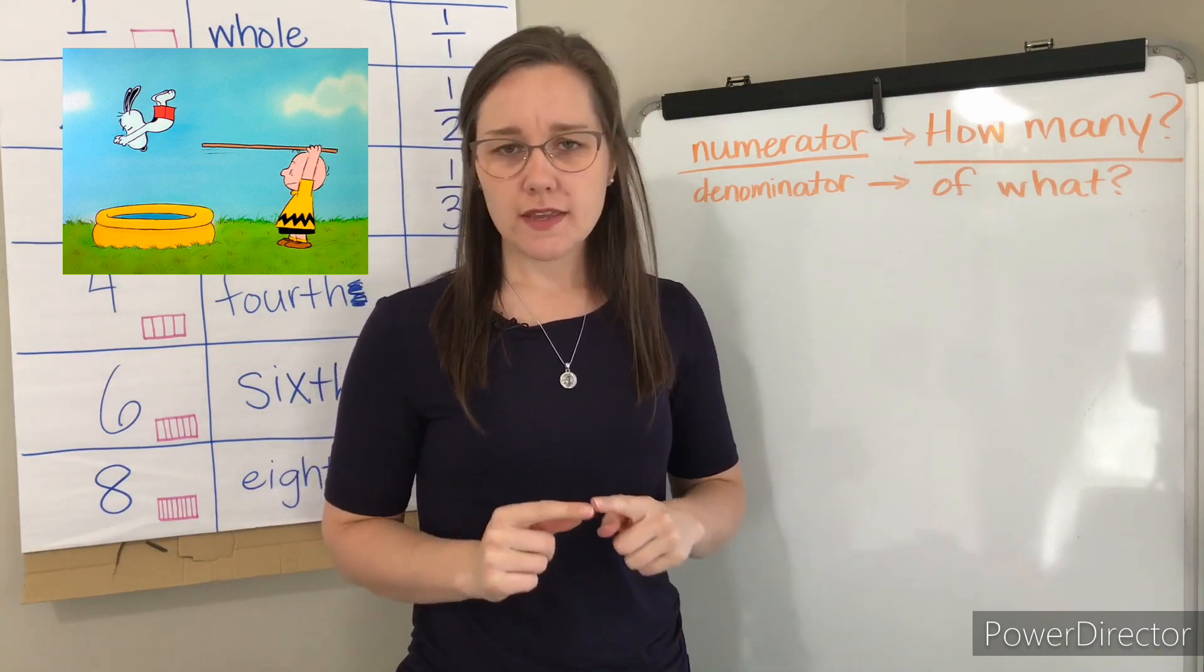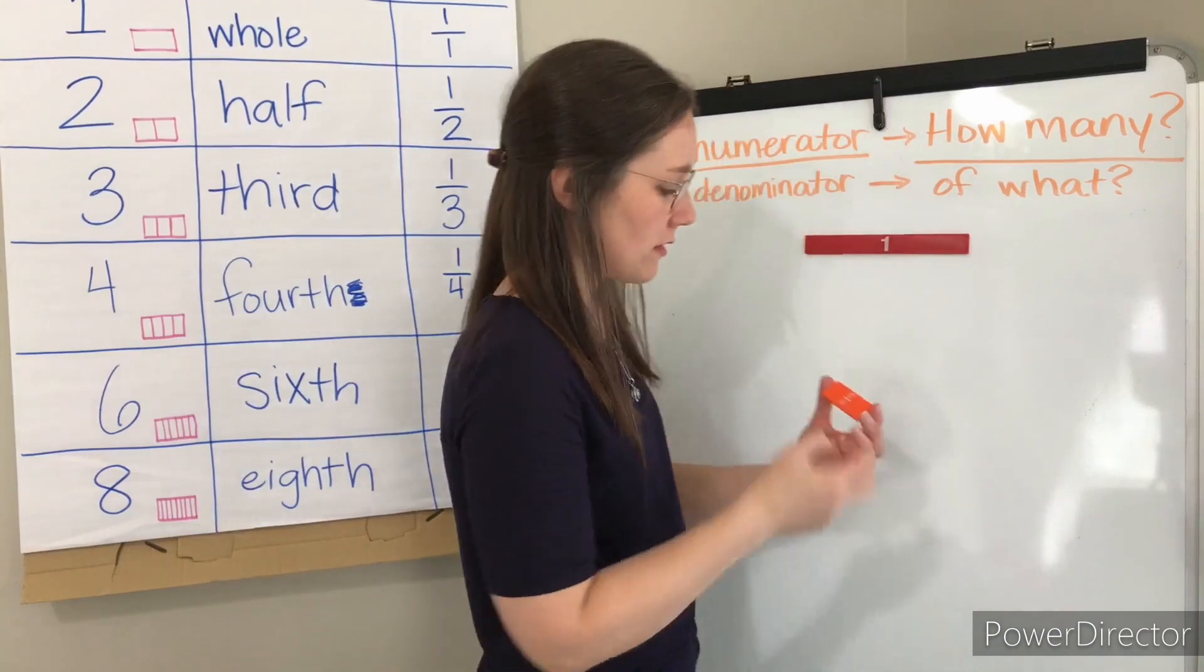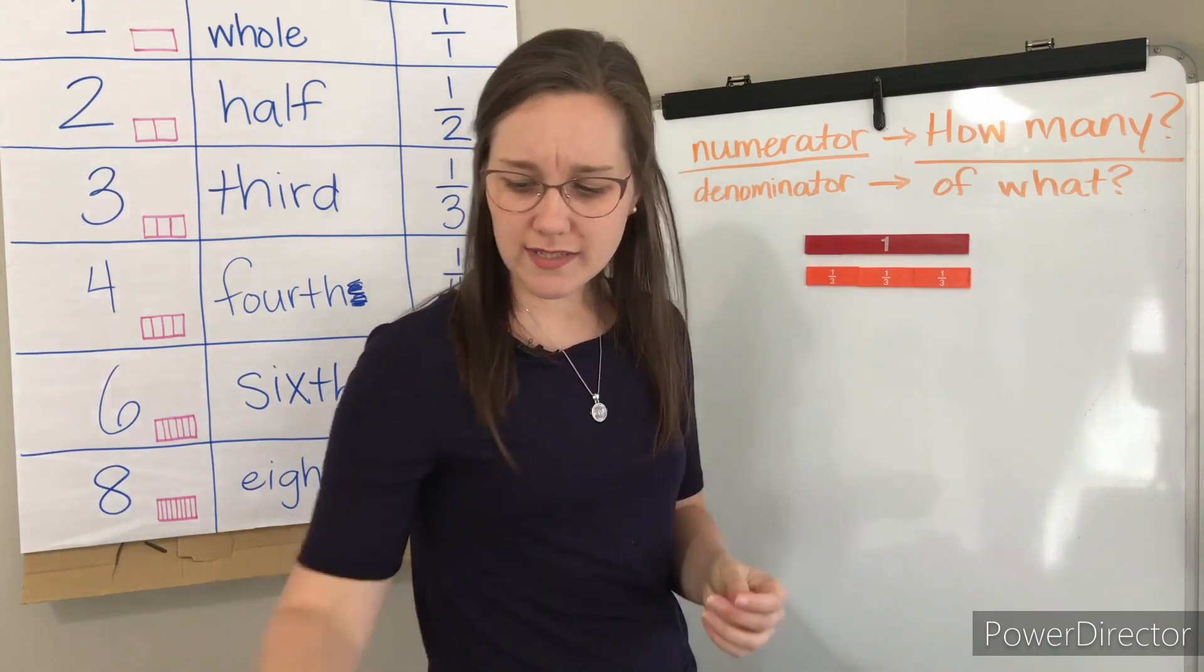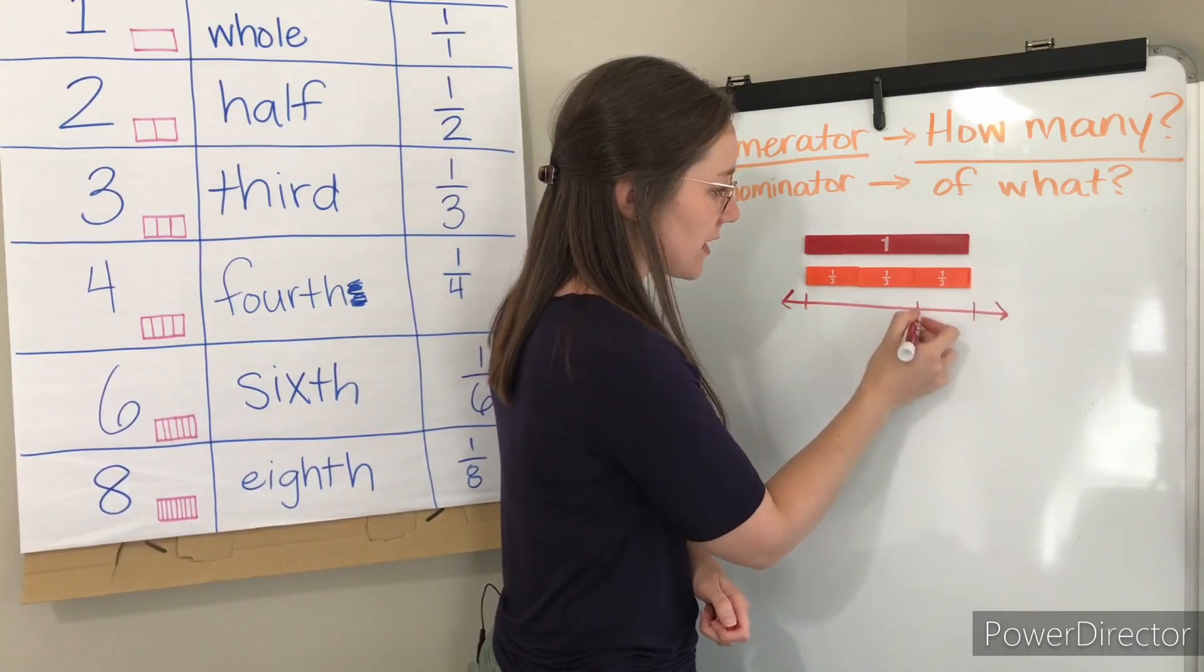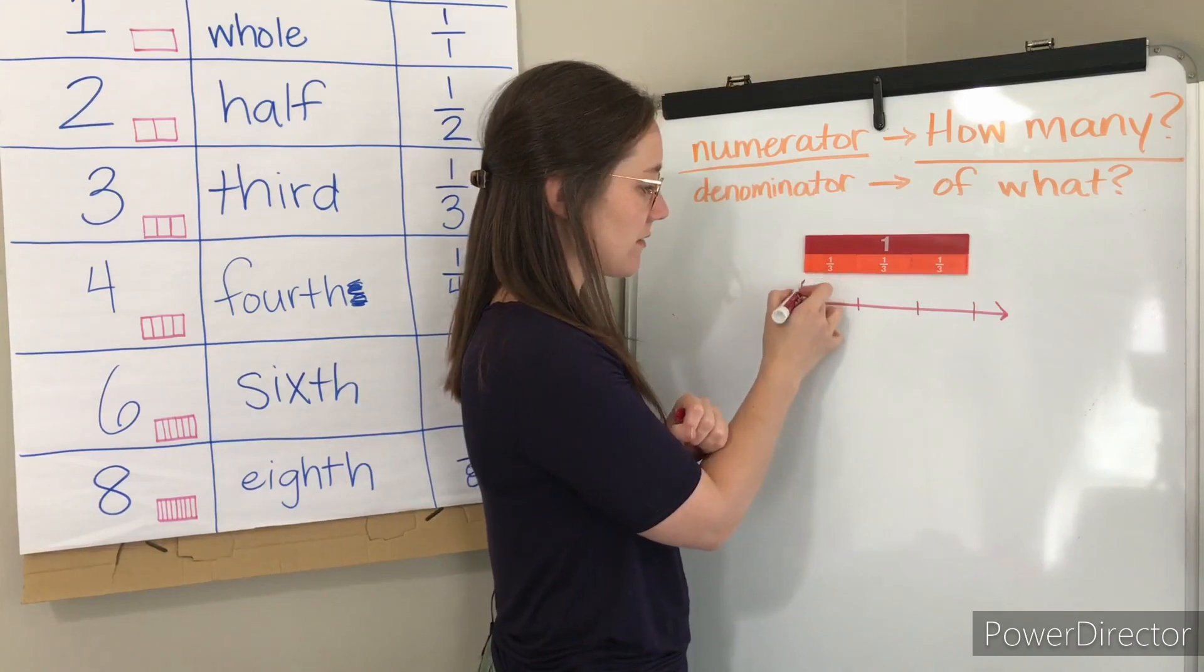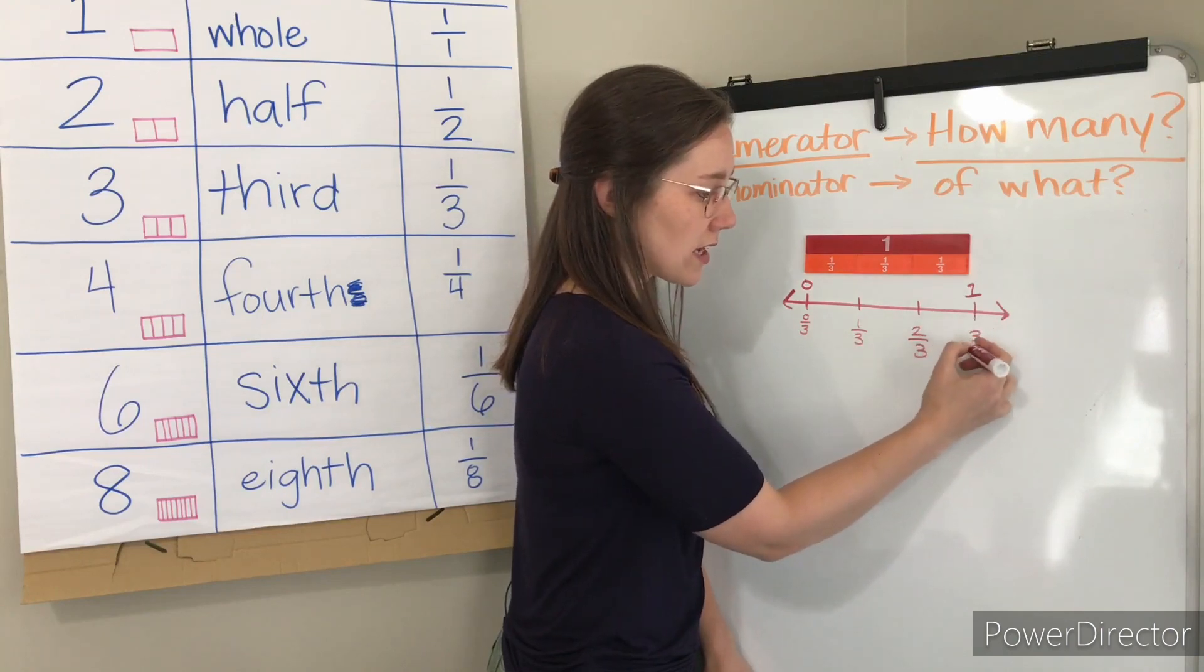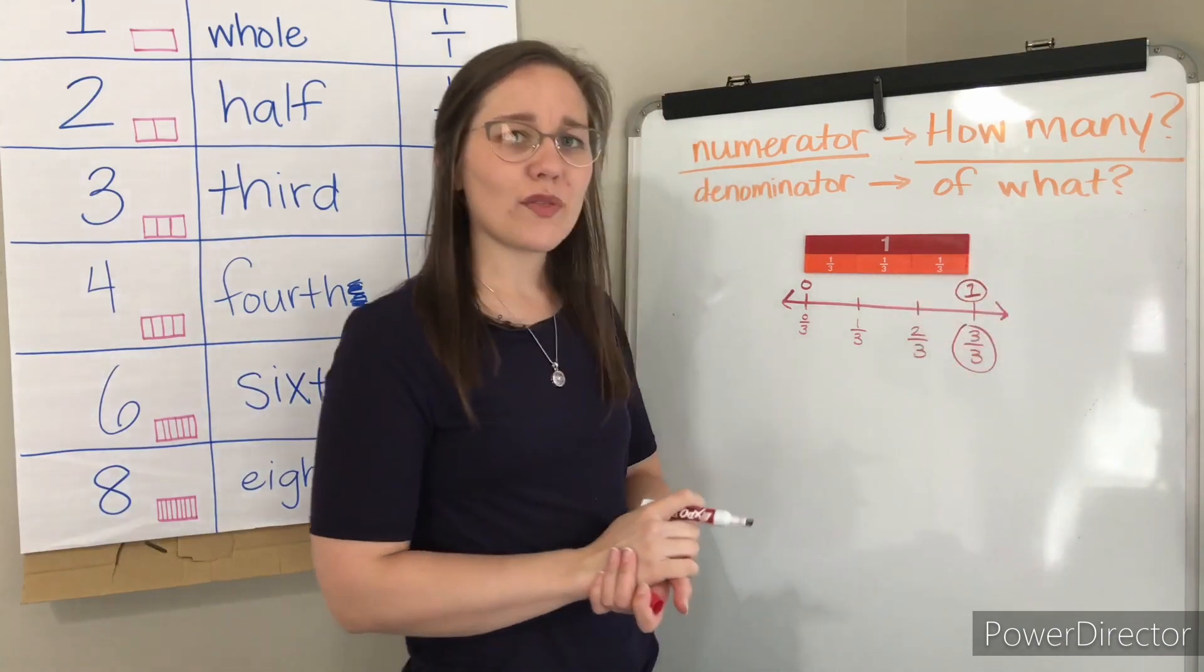I want to show you something that we talked about the other day and see if you remember what this was called. Remember how we said that these were the same? If I have thirds, that means I need three equal pieces to make one whole. So if I have zero in the beginning here and one whole at the end on my number line, I could show this with thirds: zero thirds, one third, two thirds, and three thirds. Remember how we said this number and this number are the same?